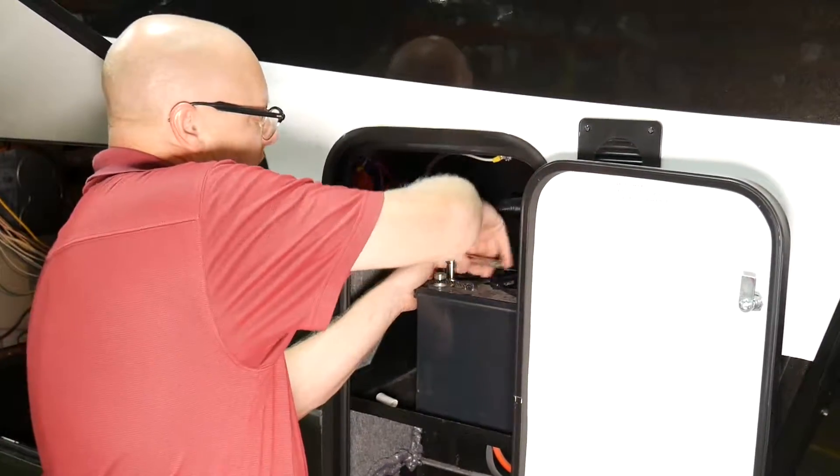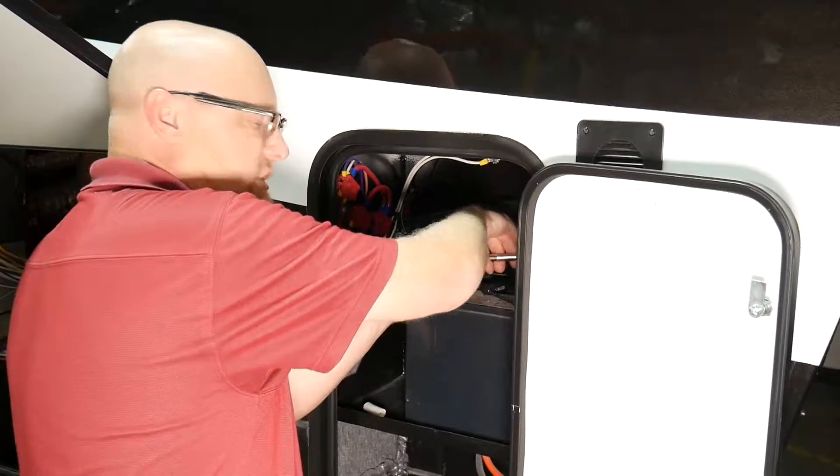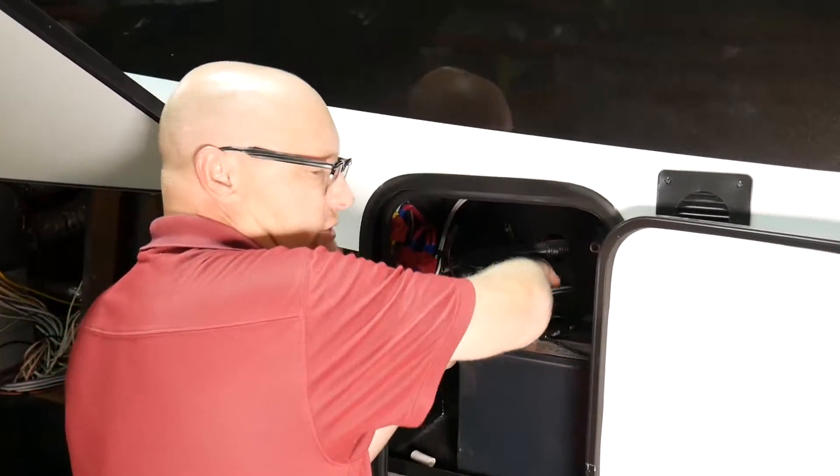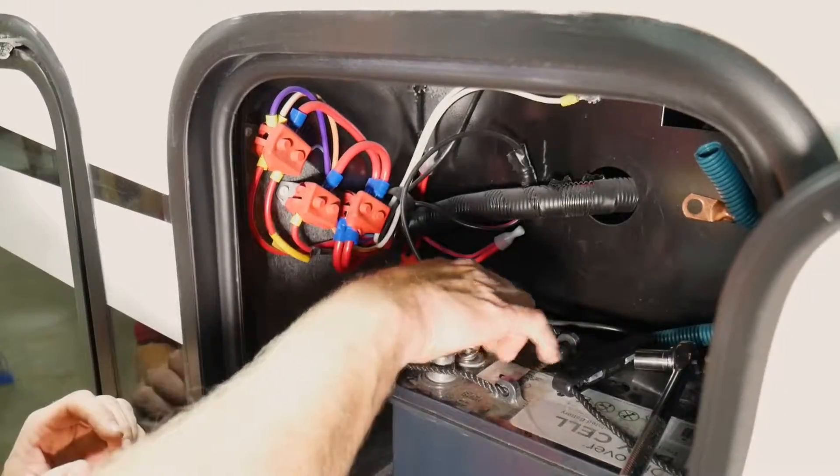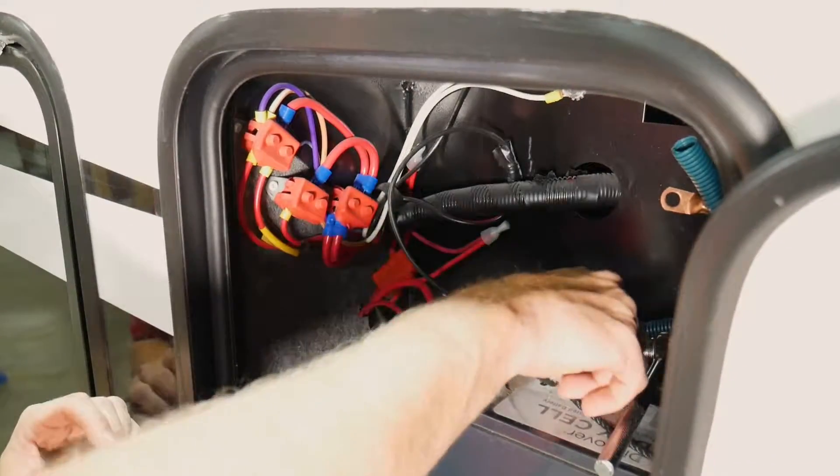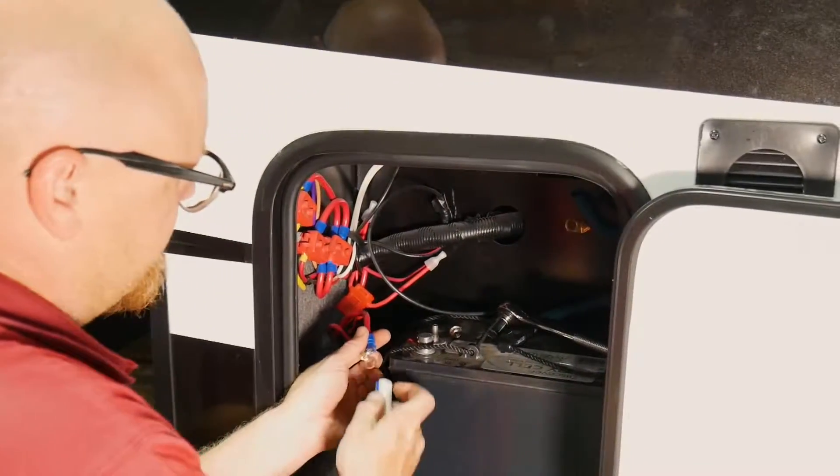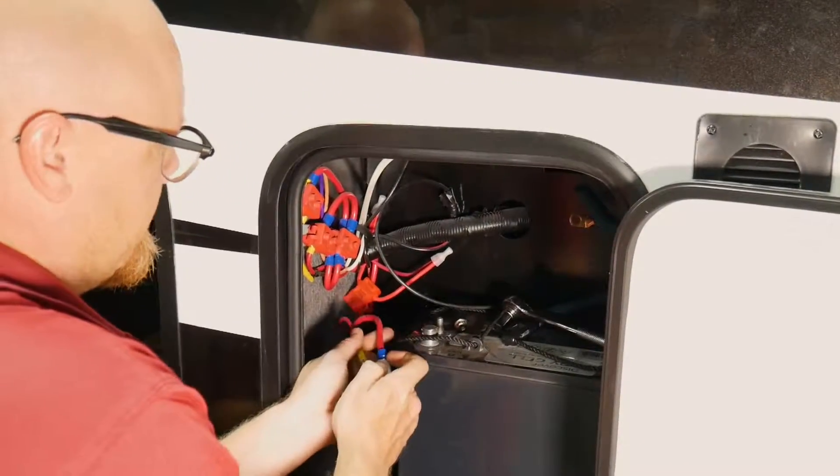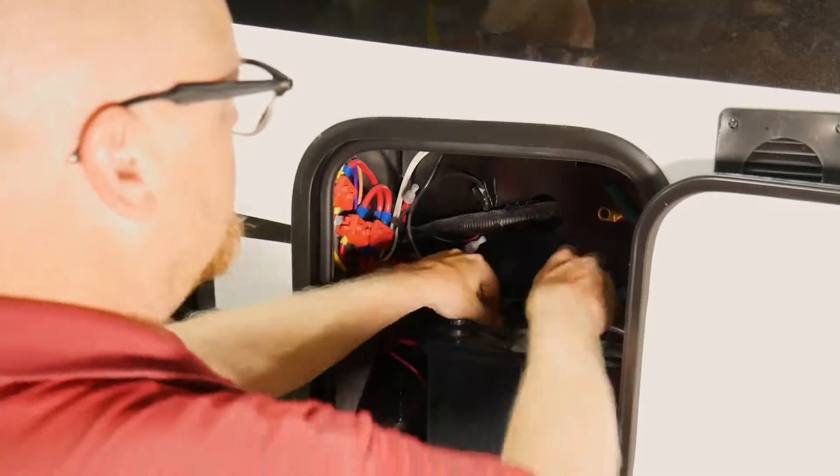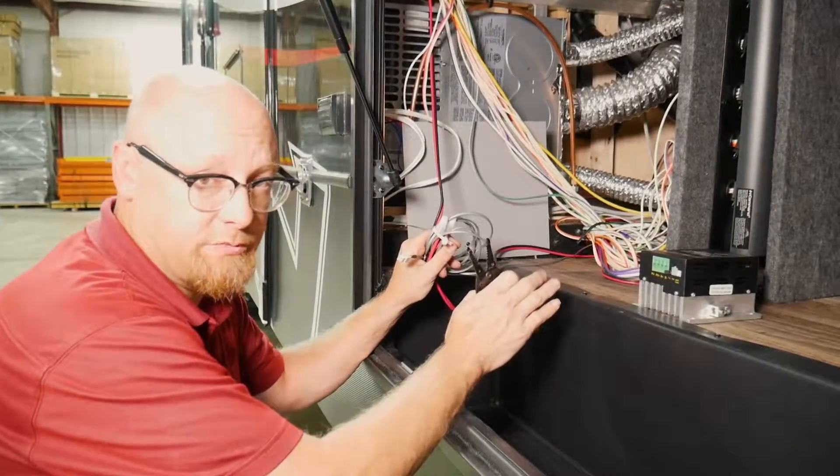We're going to want to disconnect the hot side of the battery. The reason for that is when you're back there working, even though it's 12 volt, we don't want any sparking or arcs. It's not good on the charge controller to hook it up hot. One thing I'd recommend is finding something to cover over the wires with just to keep them from accidentally making contact.